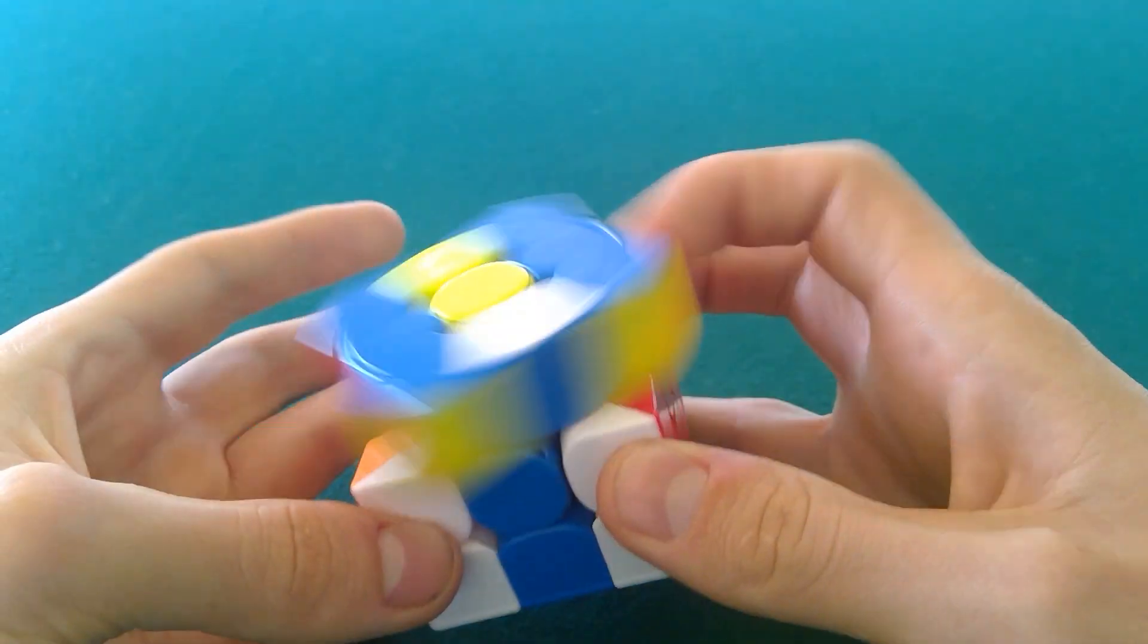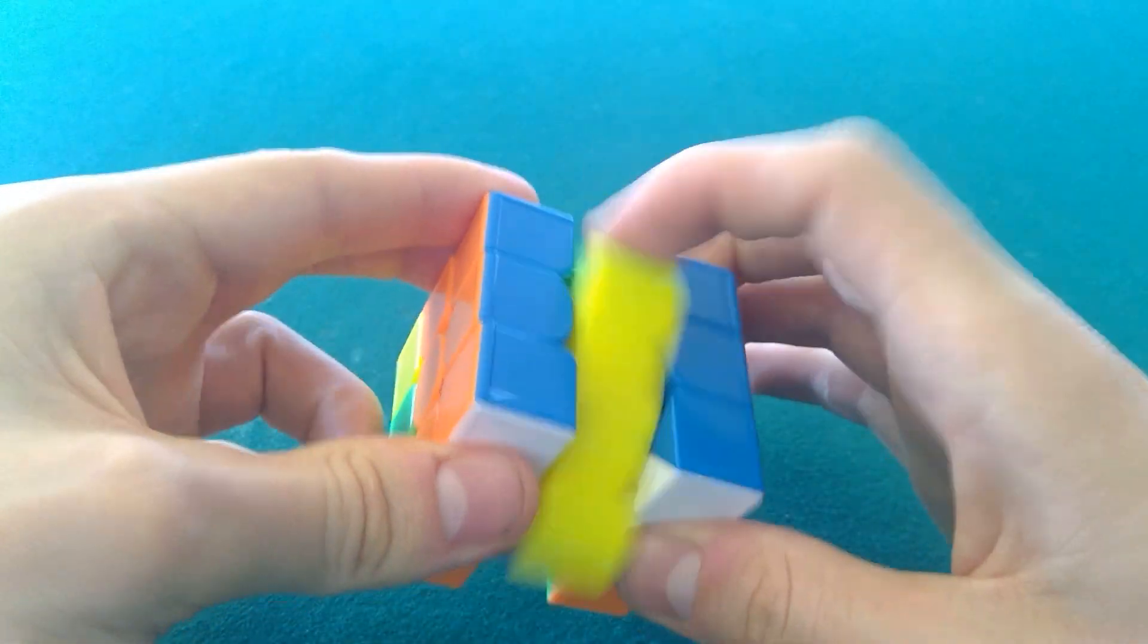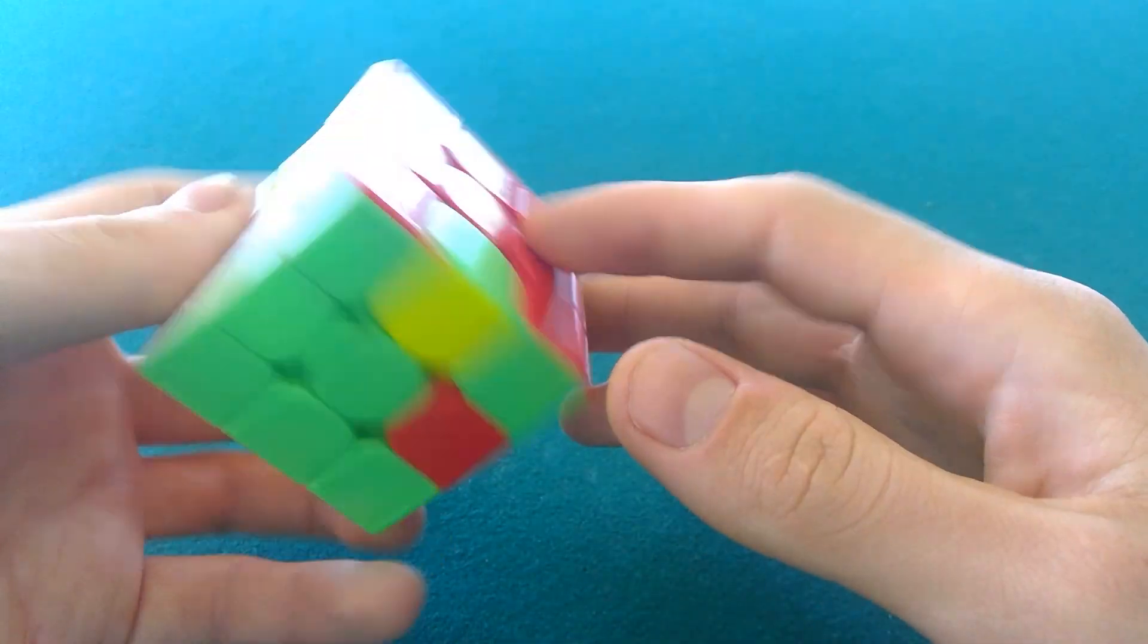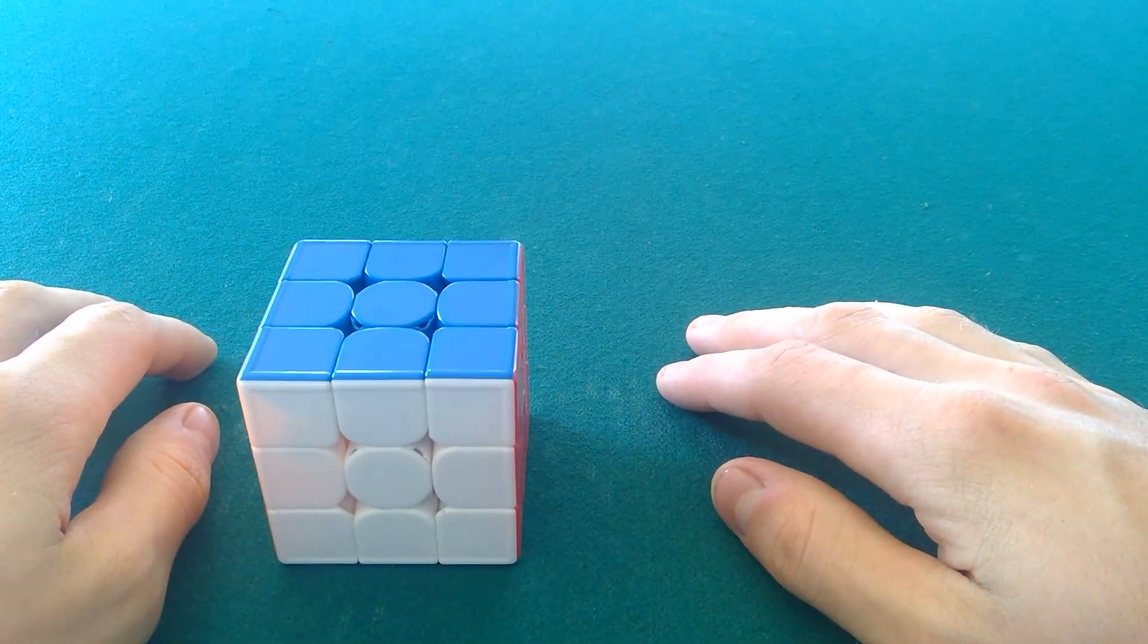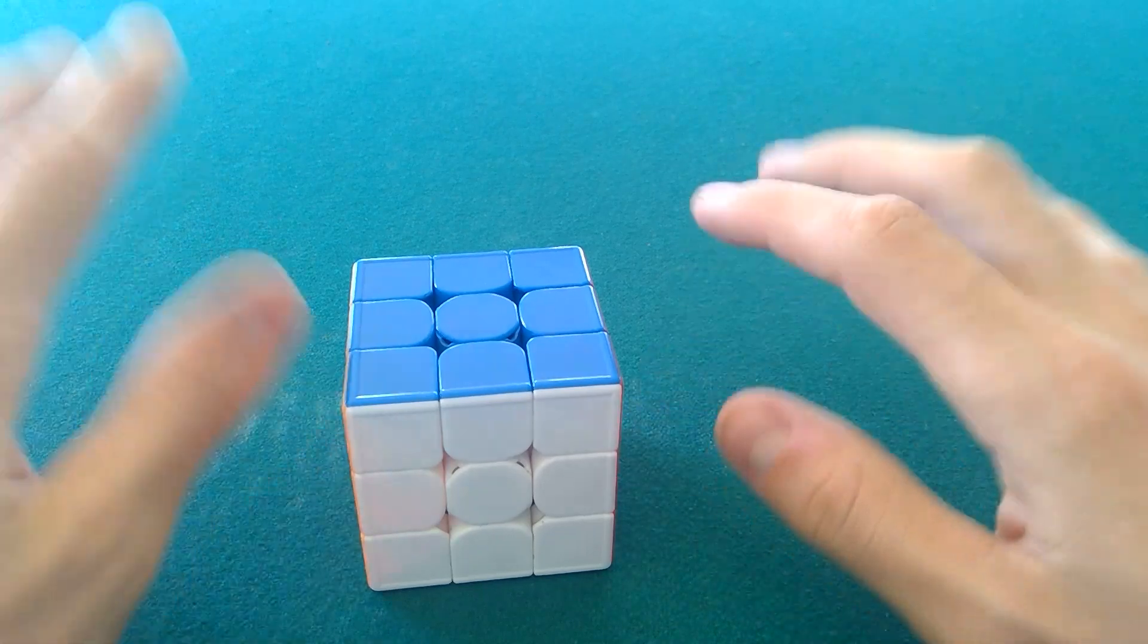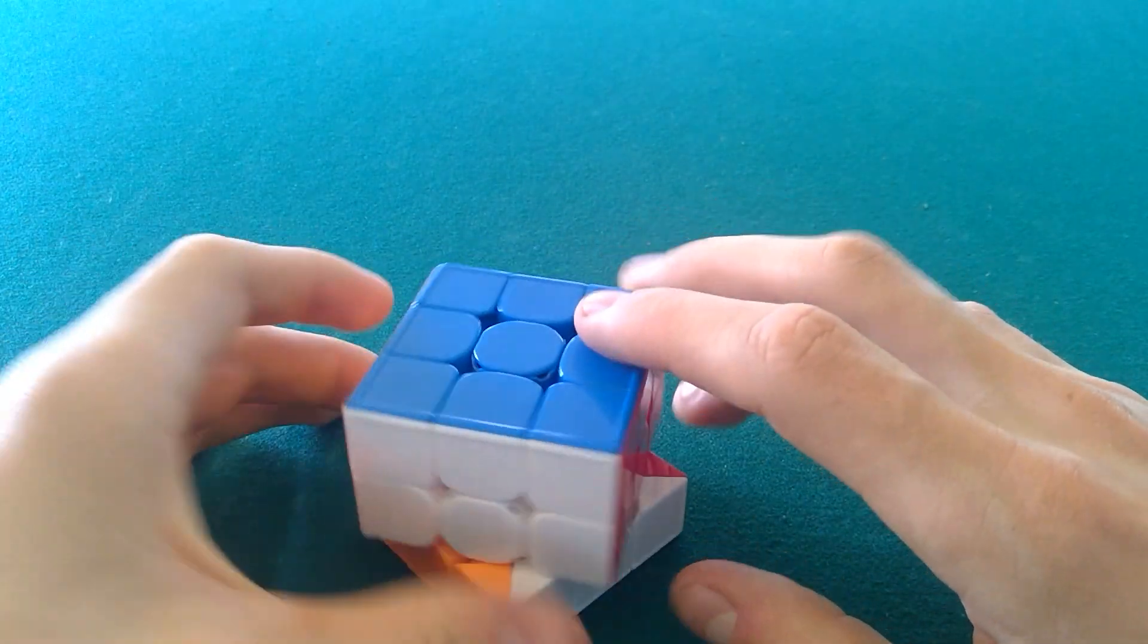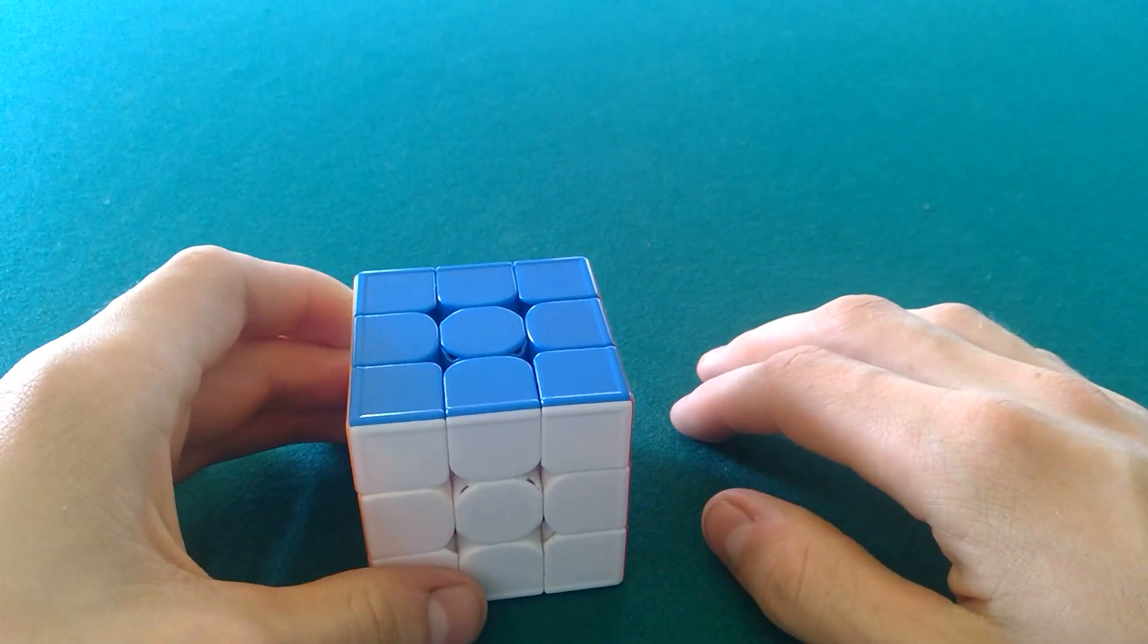And of course you could mirror it, you could also mirror them like top-bottom, like the previous one. You can do all sorts with this stuff, so that's why these ones are kind of useful. And be mindful of the AUF, especially on that last one I just showed you, because it ends with a U2.